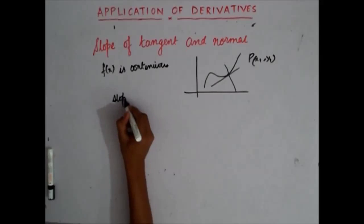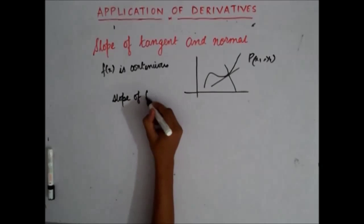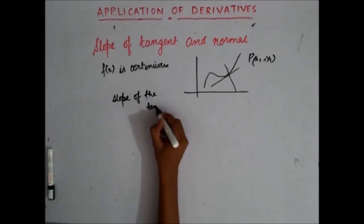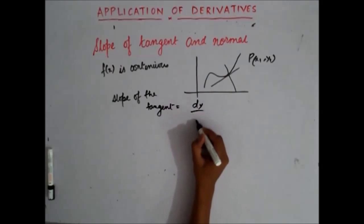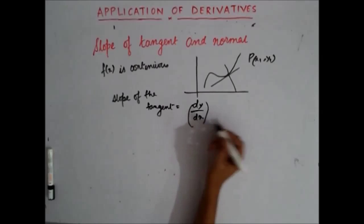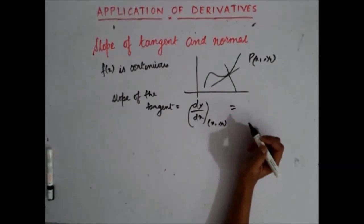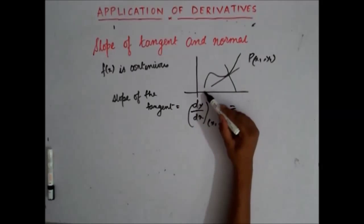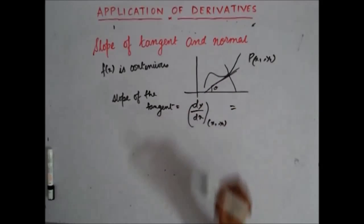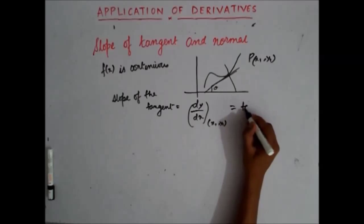Slope of the tangent is given by dy/dx at the point (x1, y1). What is this slope of the tangent? If this angle is theta that the tangent makes with the x-axis, slope of the tangent will be tan theta.